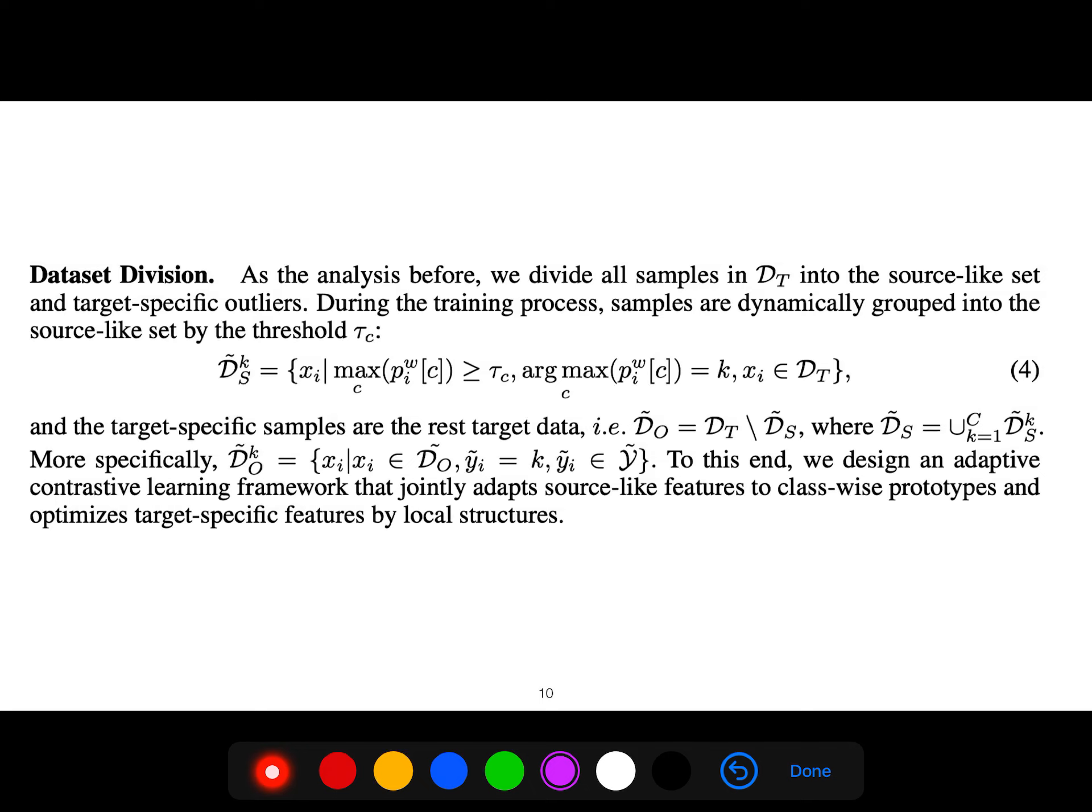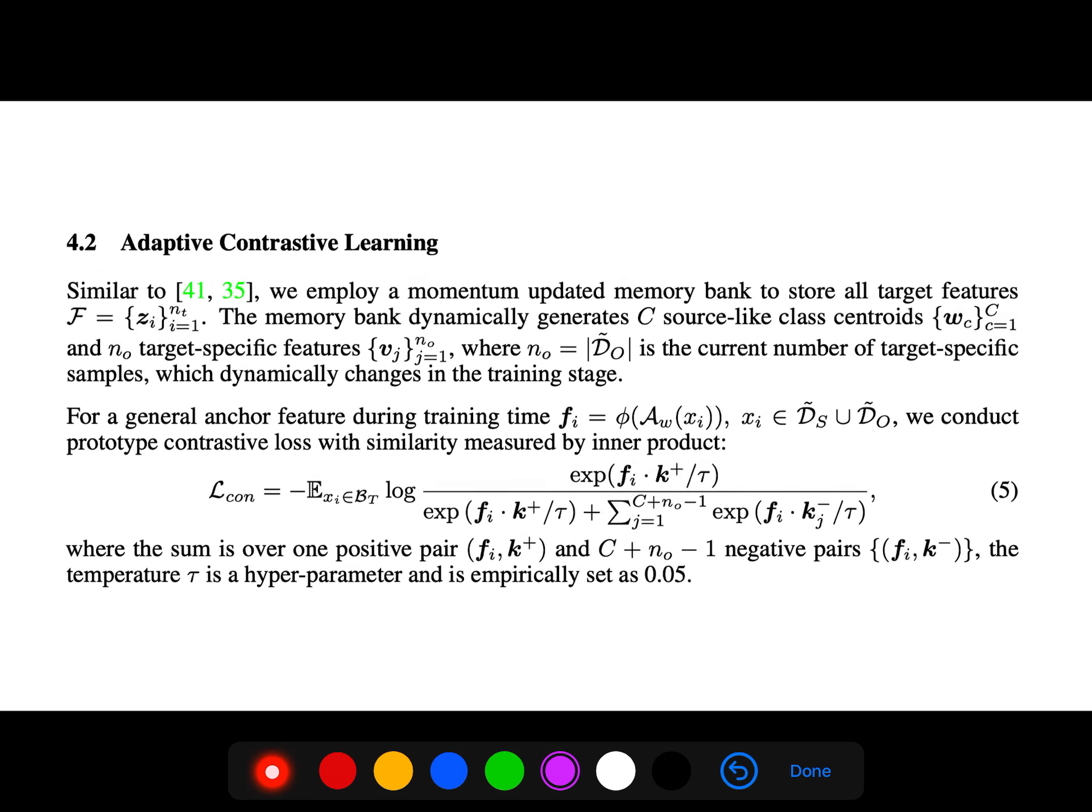As analyzed before, we divide all samples into source-like set and target set. During the training process, samples are dynamically grouped into the source-like set by the threshold tau_c. Now we conduct contrastive learning.